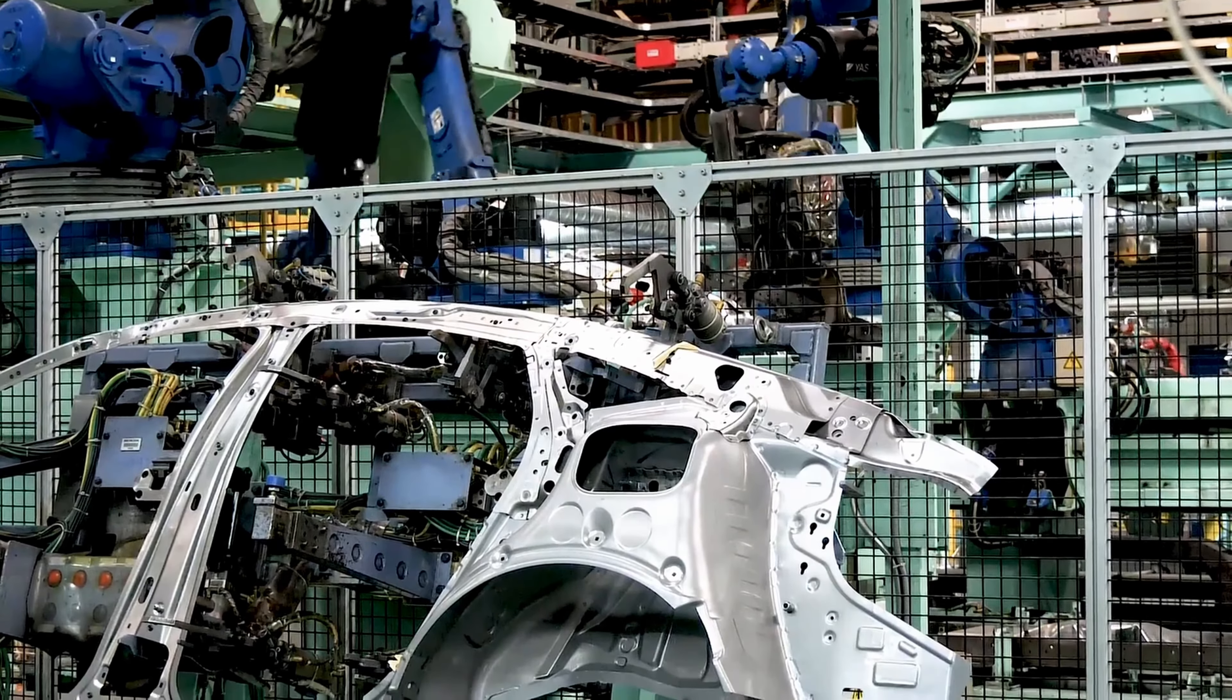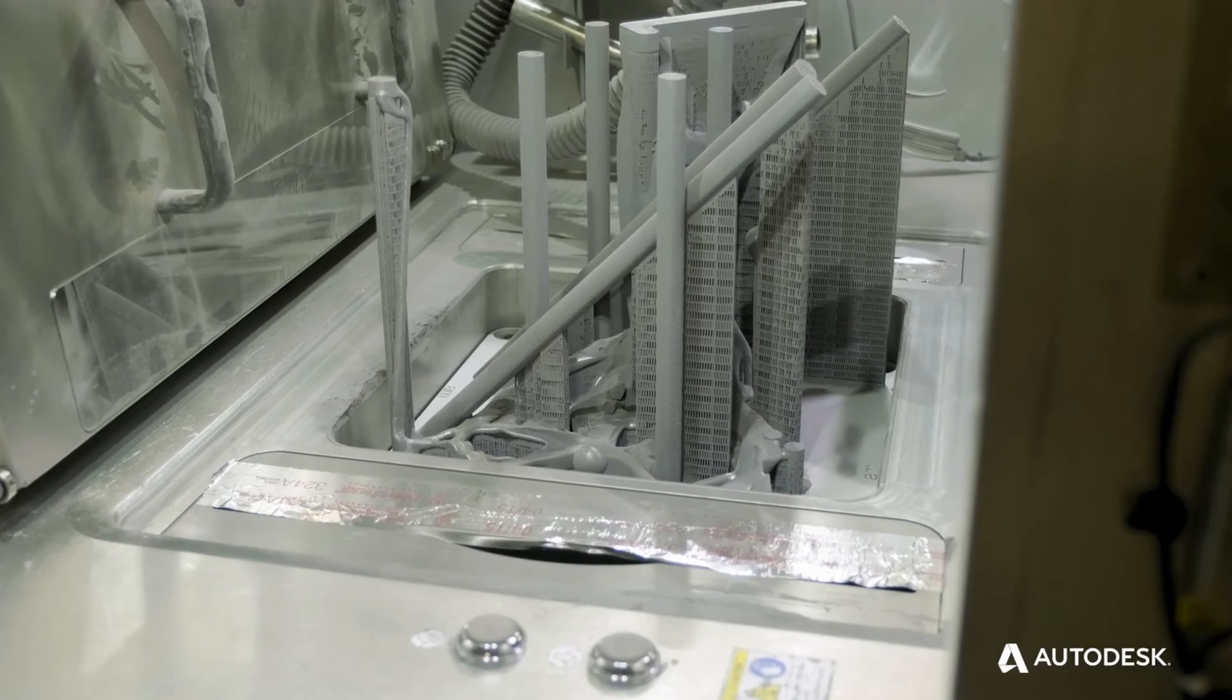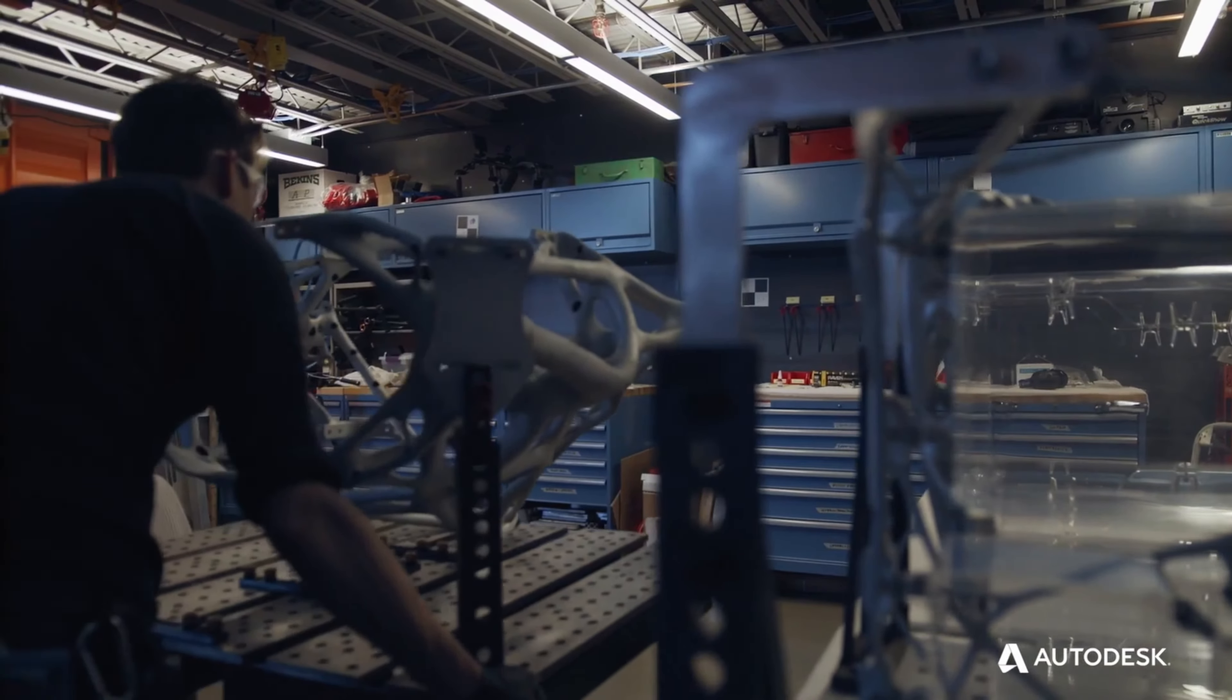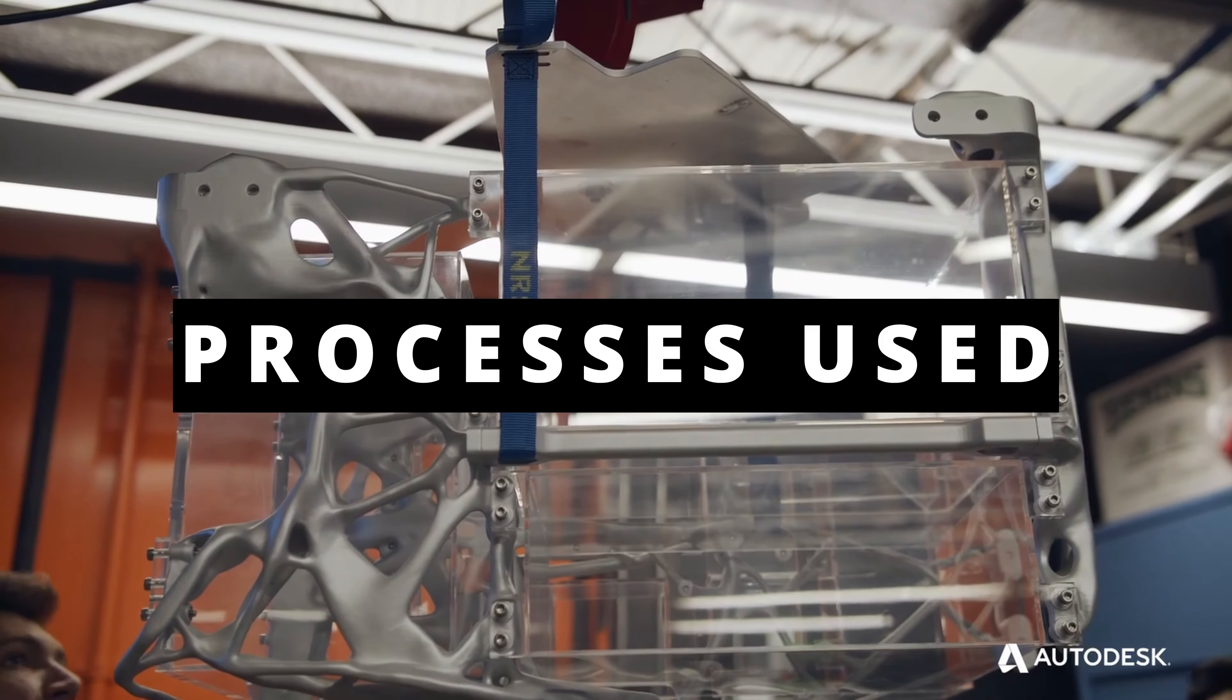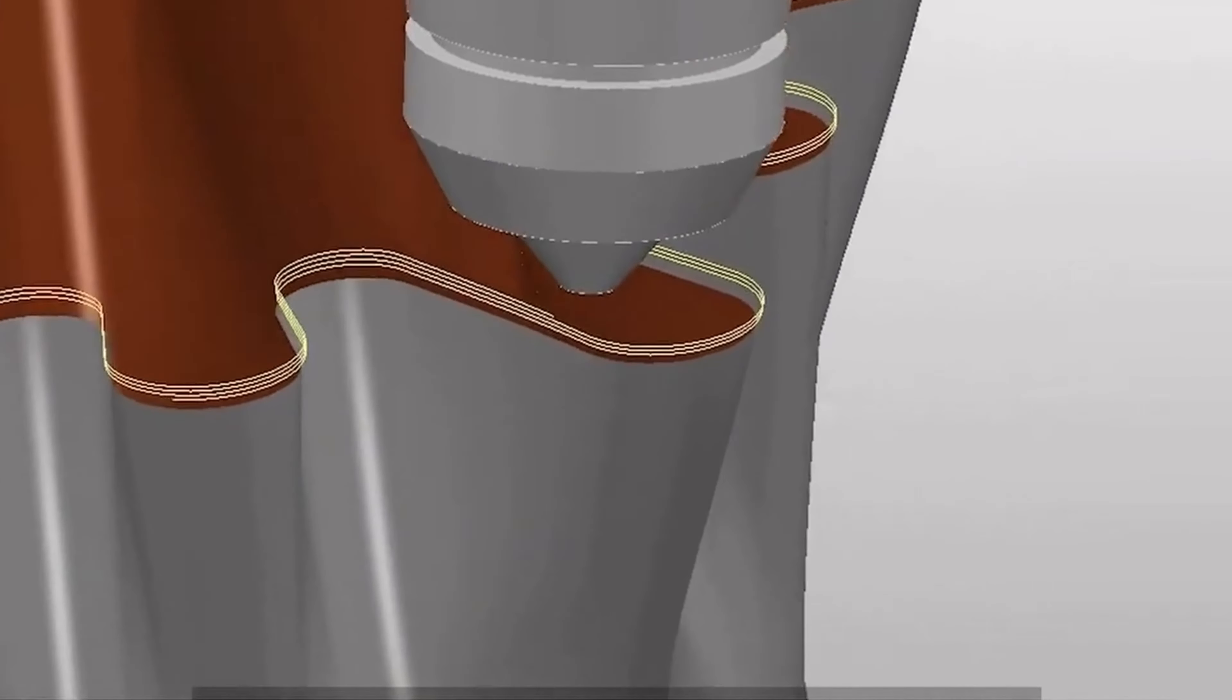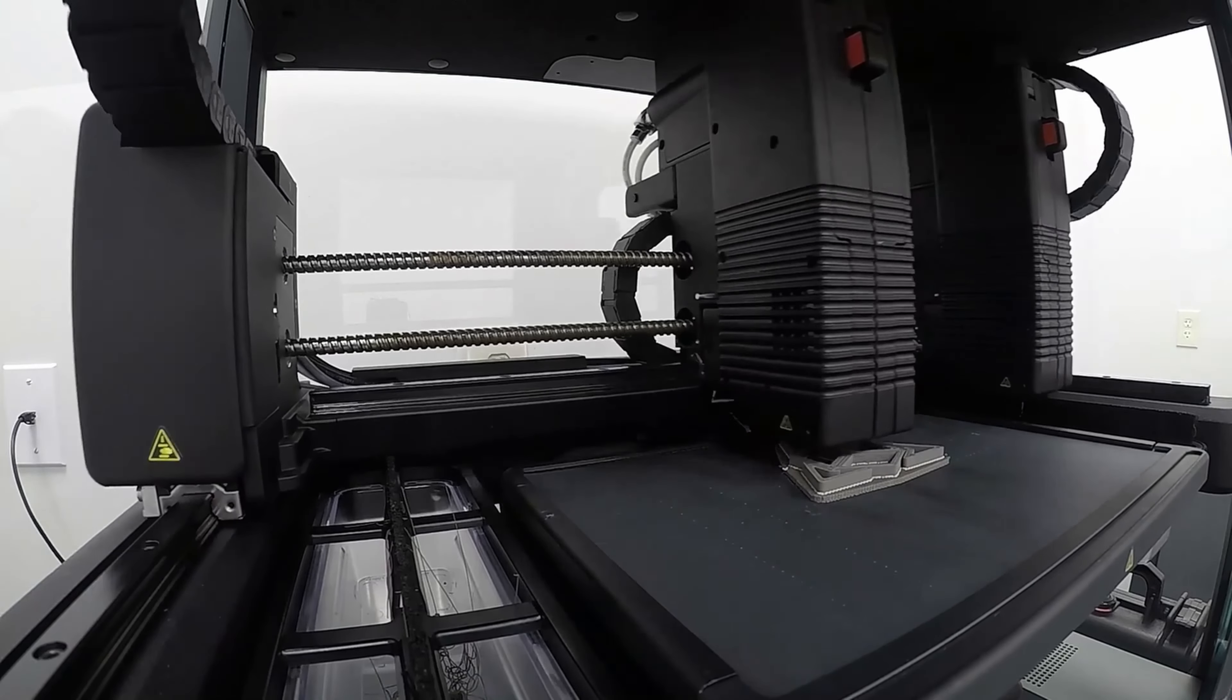However, not all metal 3D printing processes are created equally. As mentioned, each process comes down to how new material feeds into the printer, and how that material is consolidated into 3D geometry. At this time, there are several popular industrial solutions on the market, listed here in order of perceived popularity.